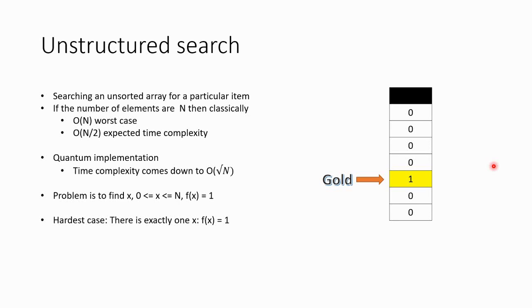Formally, the problem we are going to solve is: find x, where x is an element from 0 to n and we need to find f(x) = 1. The real problem — the array can have any number of elements, any type of numbers, and we are looking for a particular number.